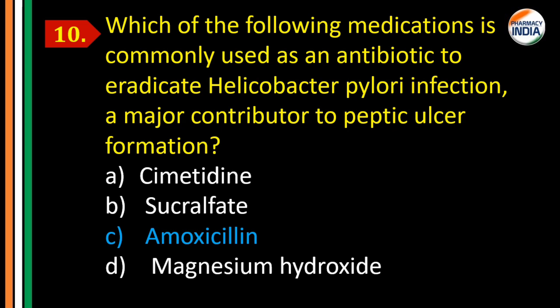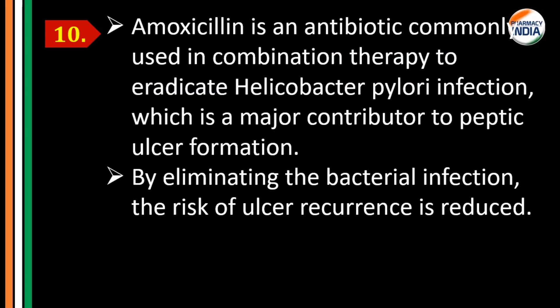Question number ten: which medication is commonly used as an antibiotic to eradicate Helicobacter pylori infection, a major contributor to peptic ulcer formation? The correct answer is Option C, amoxicillin. H. pylori infection is an important factor in peptic ulcer. Amoxicillin eradicates the H. pylori infection so that the peptic ulcer can heal. It is an antibiotic commonly used in combination therapy for peptic ulcer, eliminating the bacterial infection and reducing the risk of ulcer recurrence.